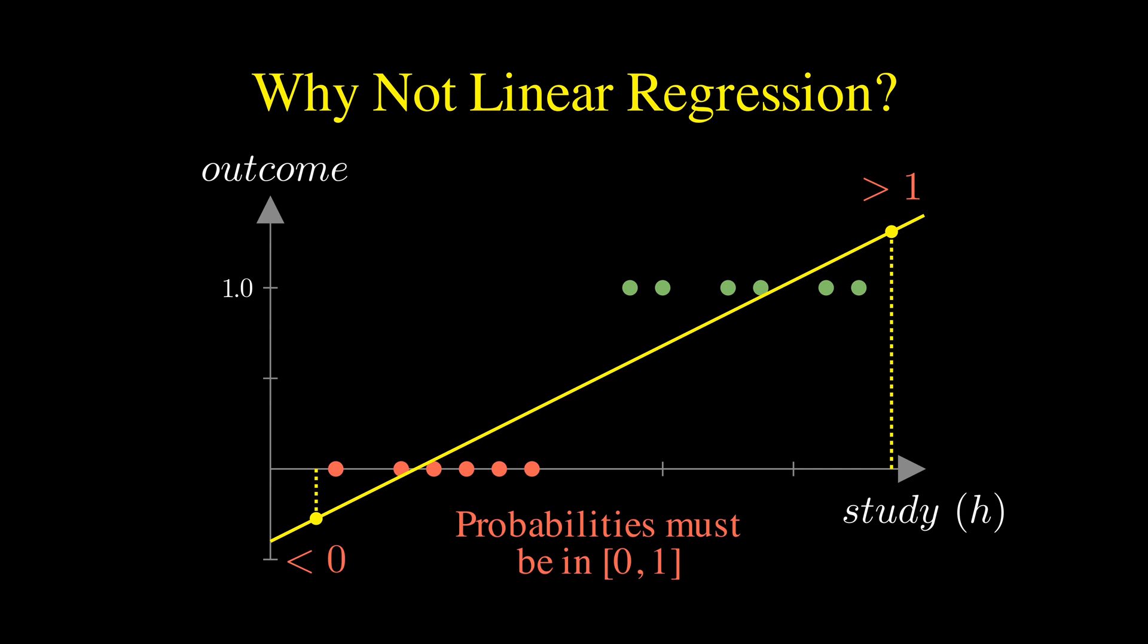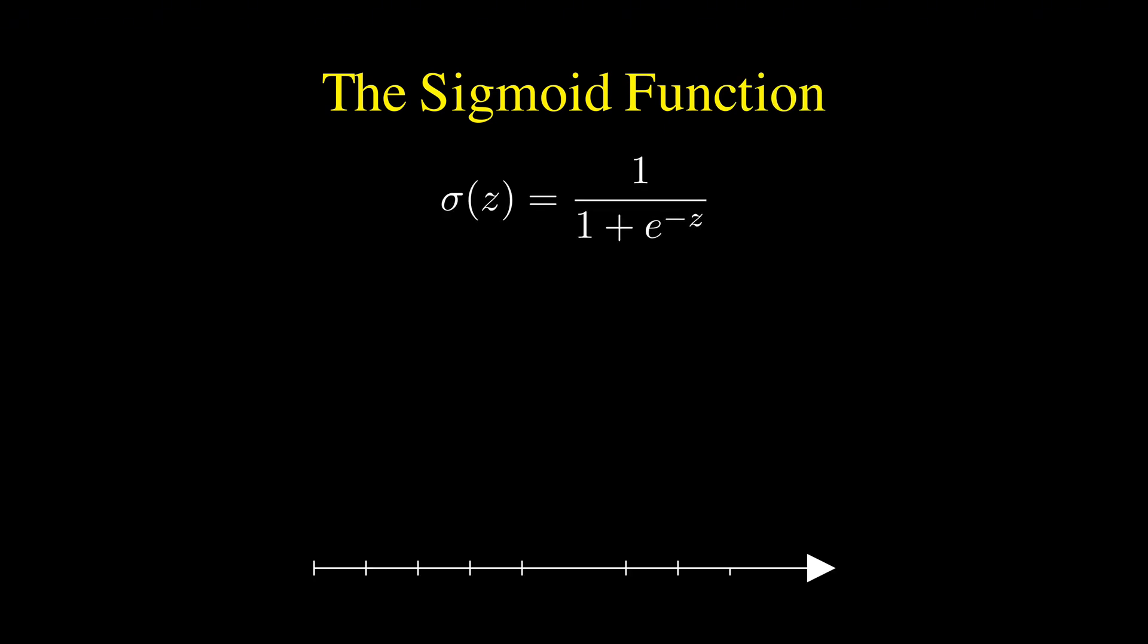Enter the sigmoid function. This s-shaped curve takes any input, no matter how large or small, and squashes it into the range between 0 and 1.